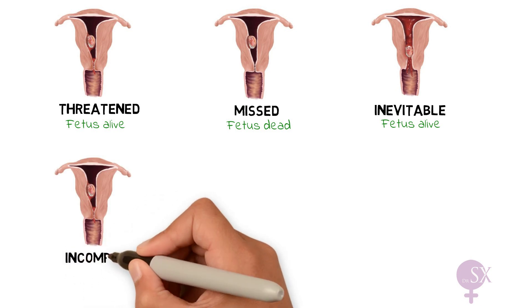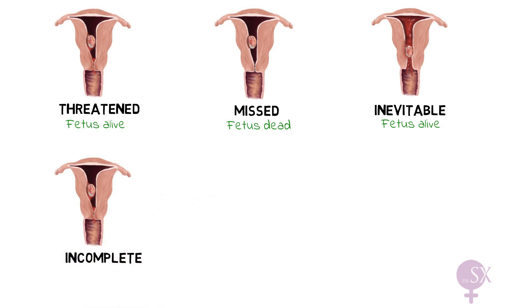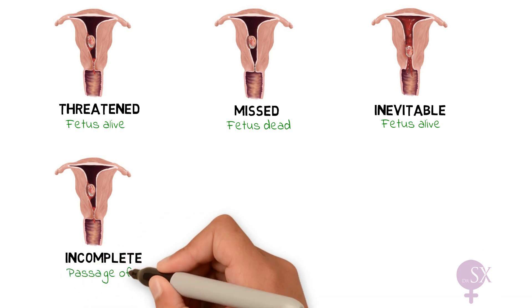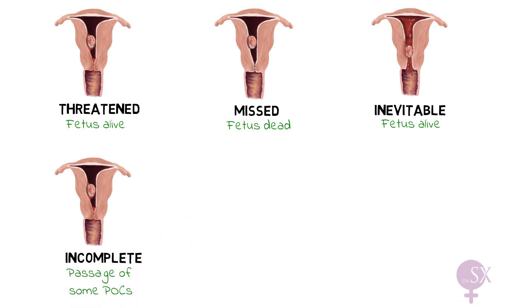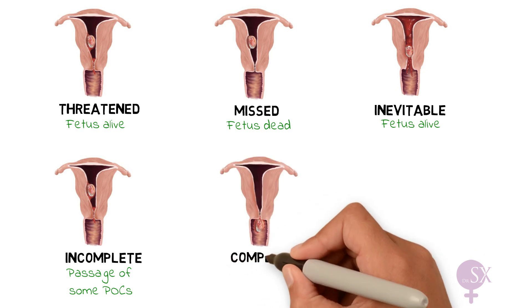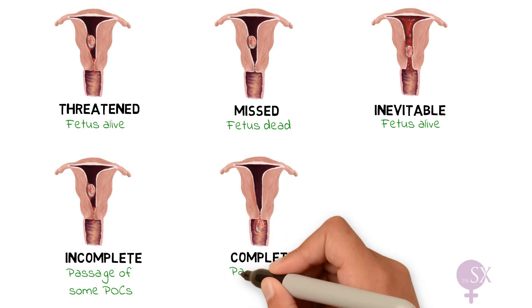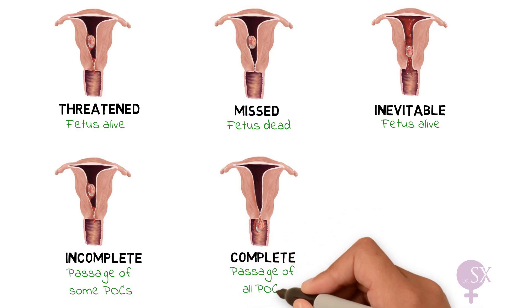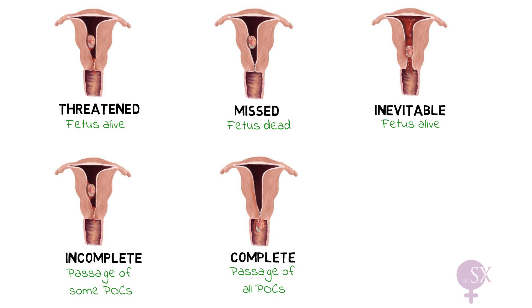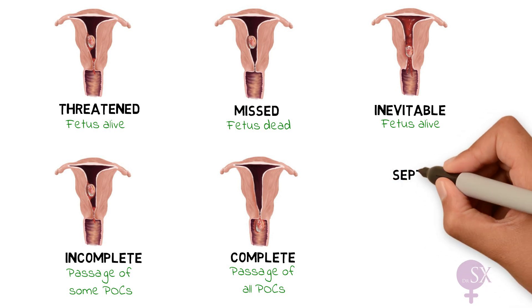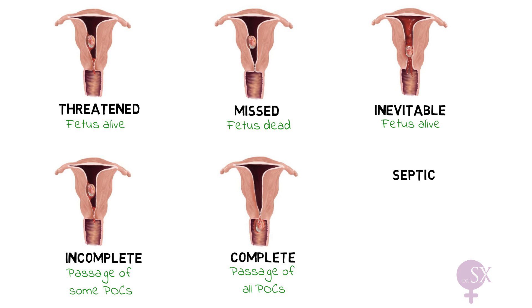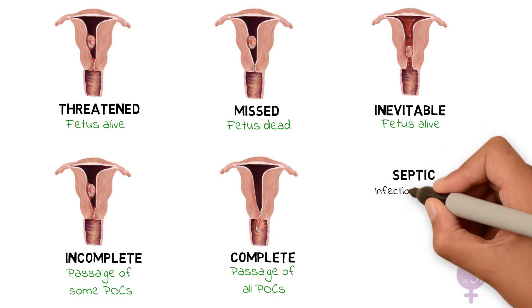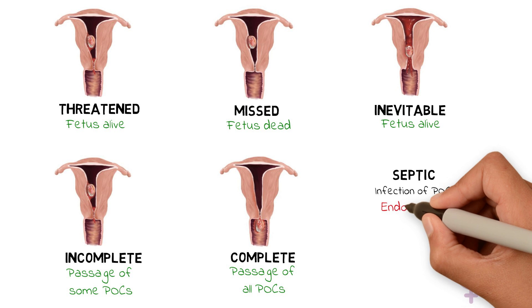Incomplete miscarriage is when there is bleeding PV with passage of some of the products of conception and an open cervical os. Because not all of the POCs have been passed, it is referred to as incomplete. A complete miscarriage is when all of the POCs have been passed, the cervical os is closed, and bleeding is now decreasing. Patients can also present with a septic miscarriage, which is a miscarriage with signs of infection — they have endometritis with infected POCs.